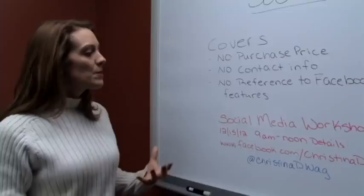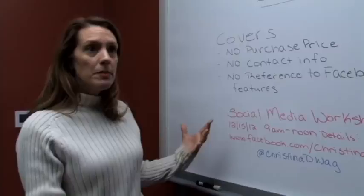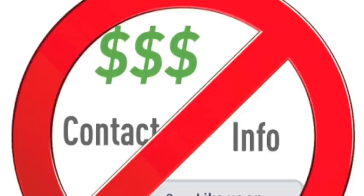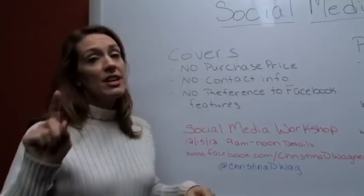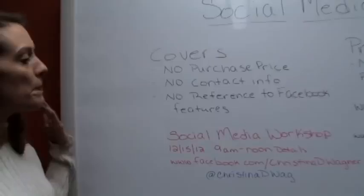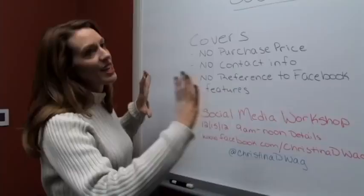So your Facebook cover — that's the image at the top of your page, either your profile, which is you the person, or the page, which is the like page. That cover is at the top and it's really supposed to show an image of who you are, what your likes are, what your brand might be about. What it cannot have — what you agreed for it not to have — is no purchase price, no contact information, and no references to Facebook features like, in that timeline cover, 'like our page,' 'share our page,' 'connect with us.' That information is supposed to be in your about section.